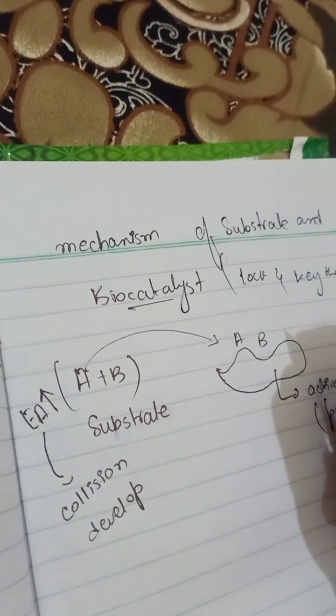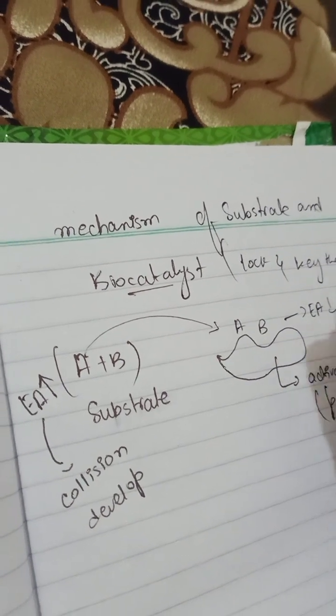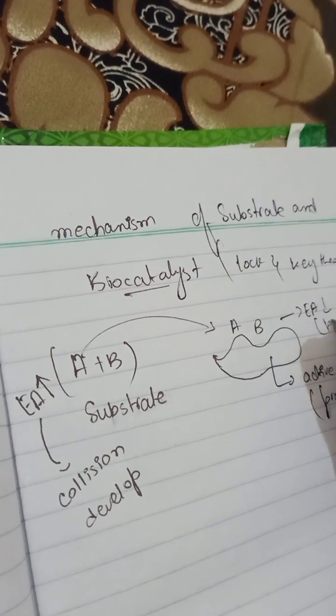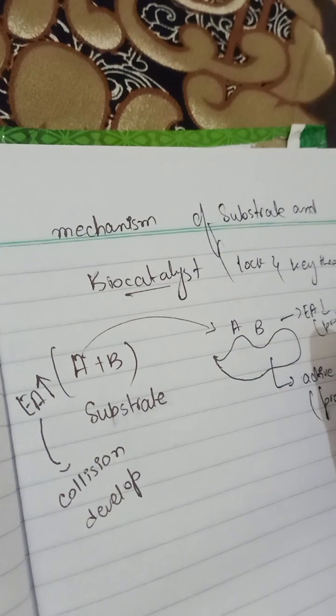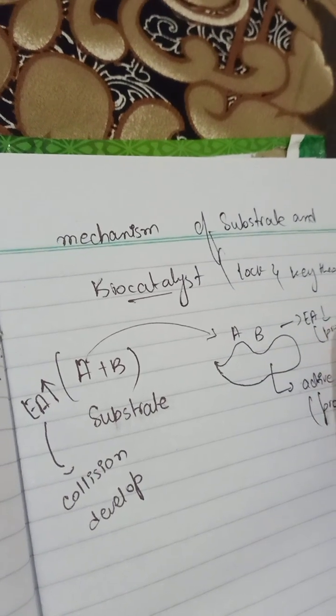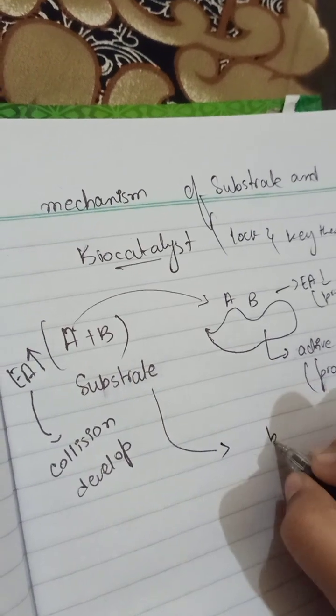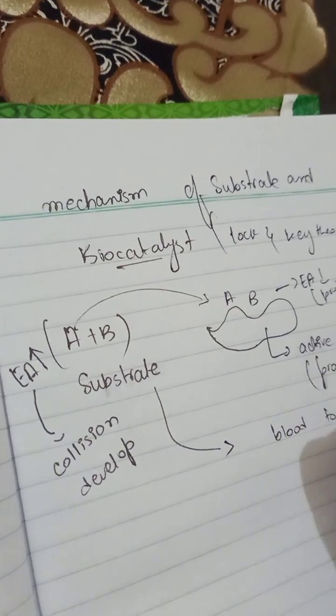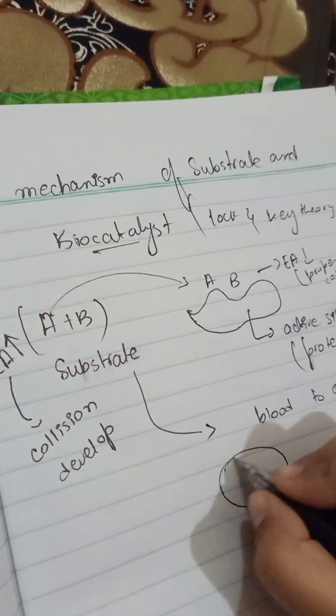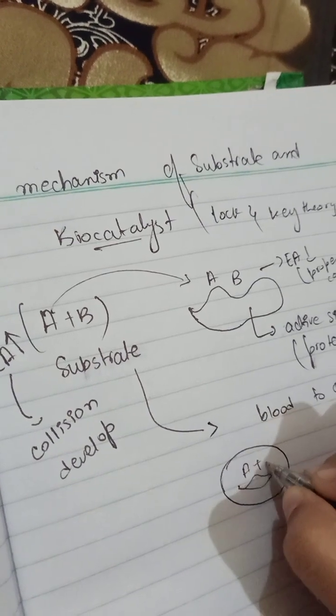And when it will bind, the activation energy will be reduced and proper collision will be there. And then the chemical reaction will be started. So the substrate will move toward the blood and blood to the cell like this. For example, this is a cell. This is an enzyme. And this is a substrate.